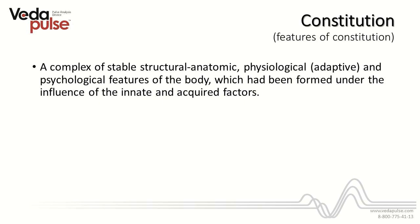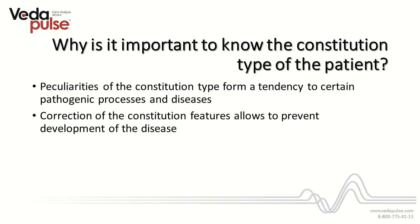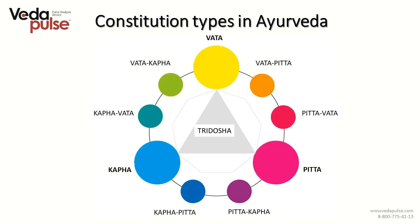Constitution of a person is a complex of stable structural, anatomic, physiological and psychological features of the body, which had been formed under the influence of innate and acquired factors. Each constitution has its own weaknesses. Knowing the constitution type of a person allows the specialist to determine predispositions to different diseases, to start working on preventive measures and treatment. There are three basic constitutional types, which from a physiological point of view are regulation systems. Relationships between the regulations form nine constitutional types based on dual combination of doshas, depending on the dominance of one of them.